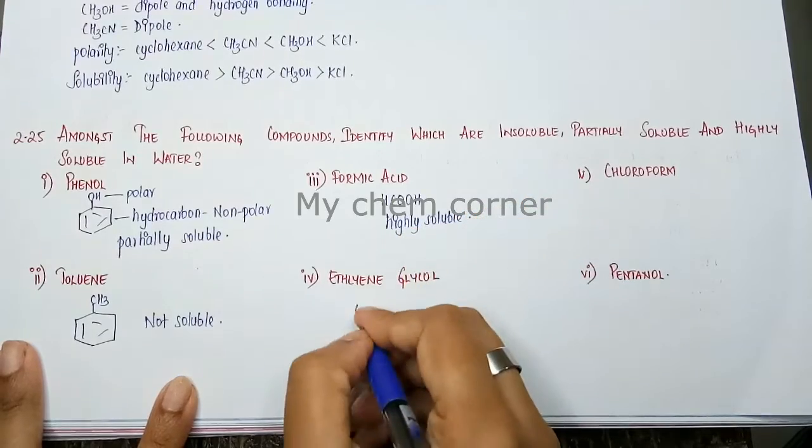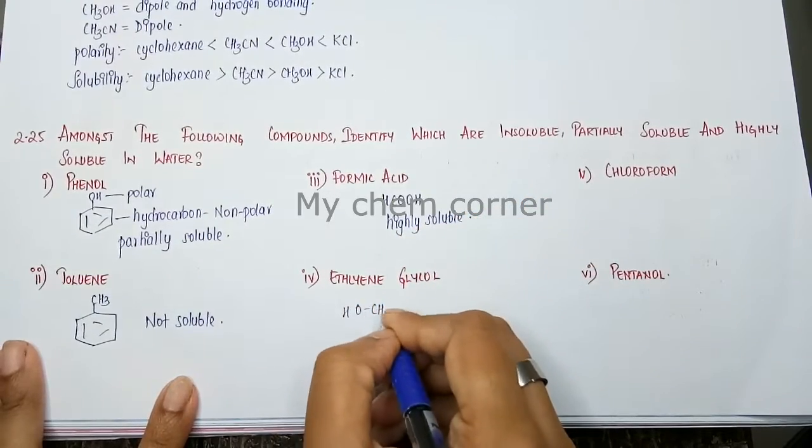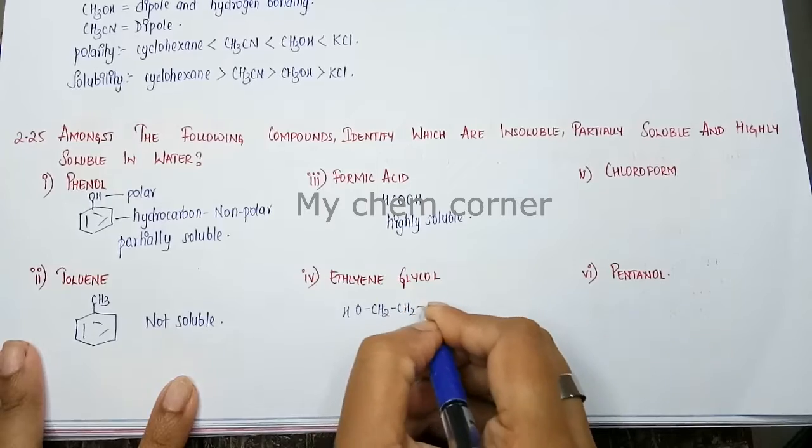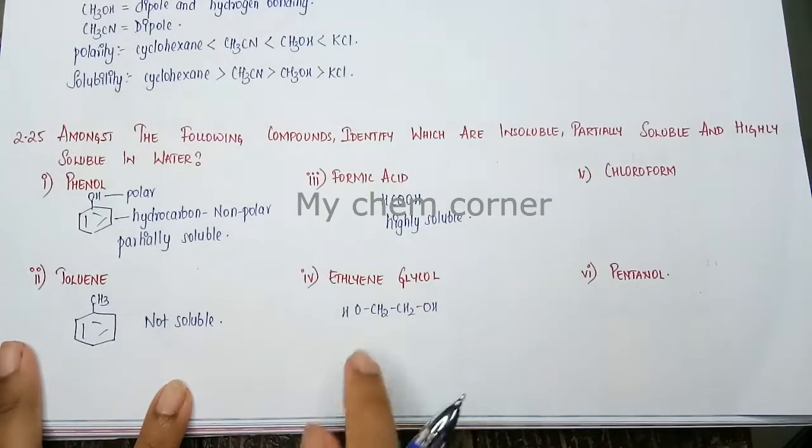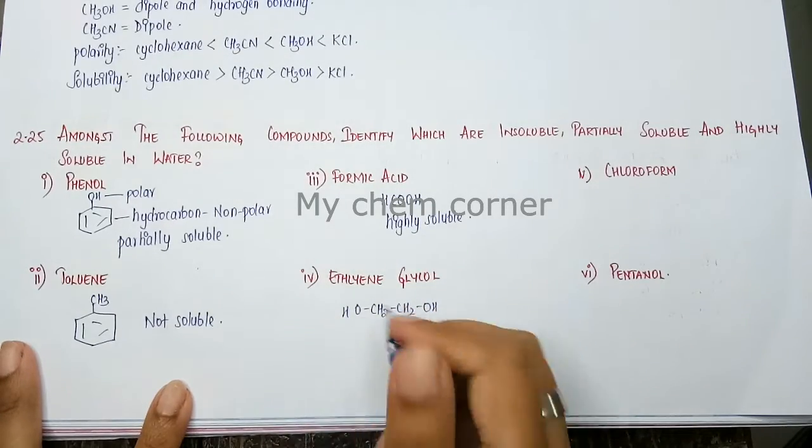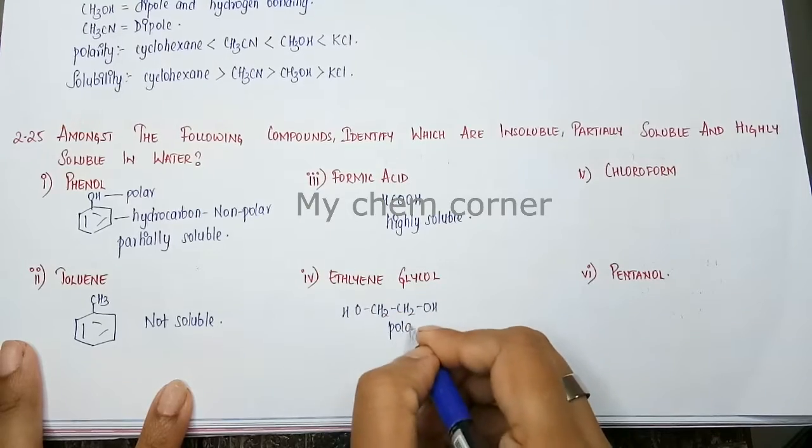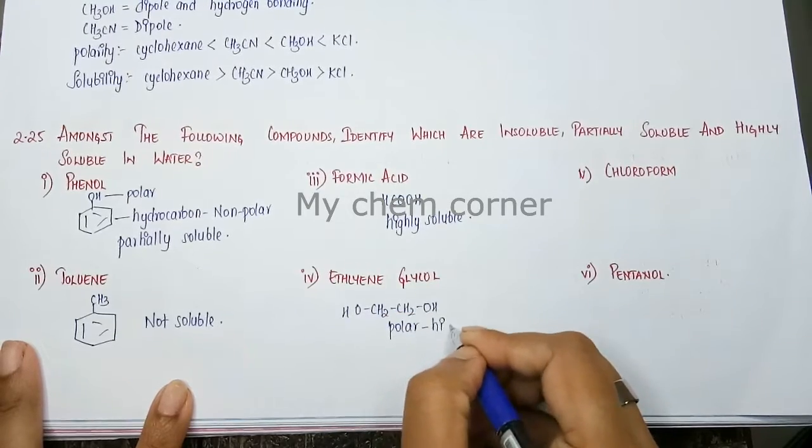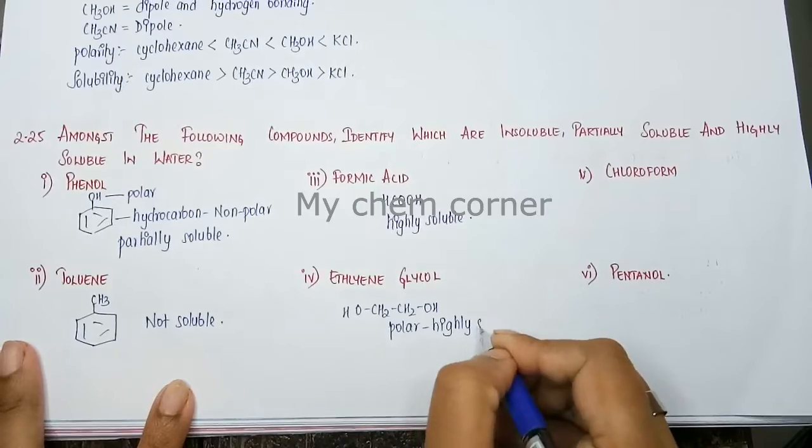Then you have ethylene glycol. You have OH, OH on two sides of CH2 chain. Now this one, since you have OH, OH on both sides, it is a polar compound. Therefore, they are highly soluble in water.